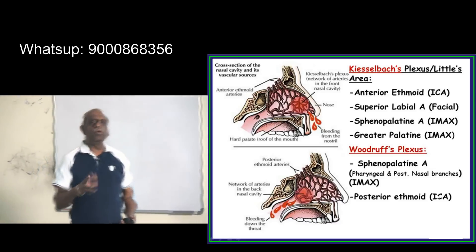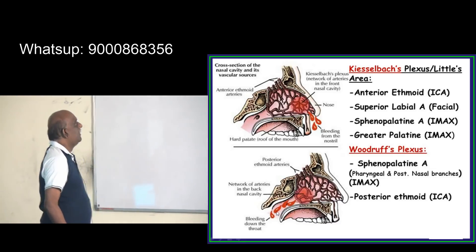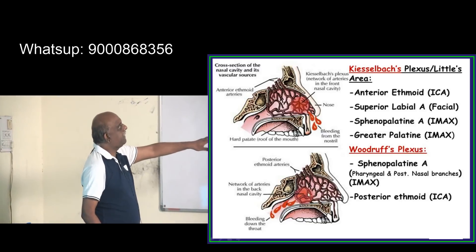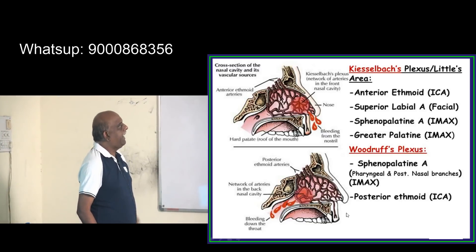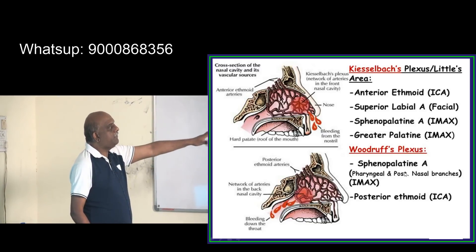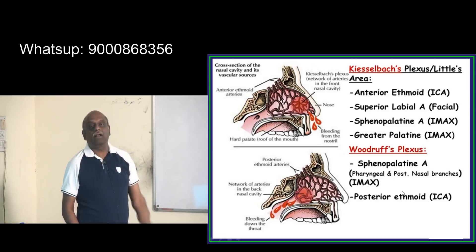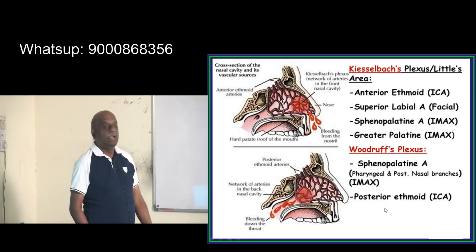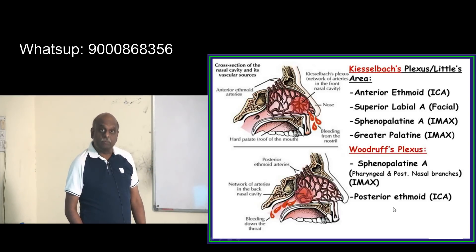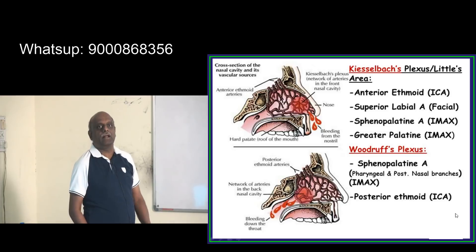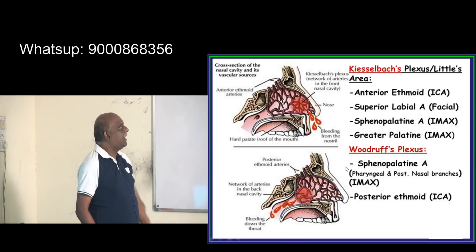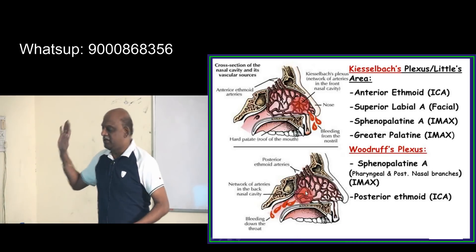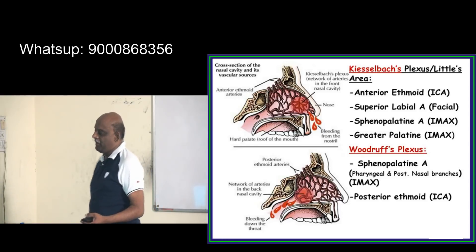Woodruff's plexus is more posteriorly located. It is constituted by the sphenopalatine artery, which is a branch of the internal maxillary artery, and the posterior ethmoid artery, which is a branch of the internal carotid artery.